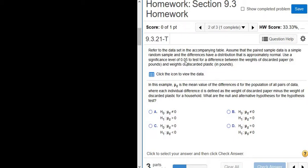Use a significance level of 0.05, that's alpha, to test for a difference between the weights of discarded paper and weights of discarded plastic.